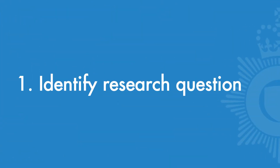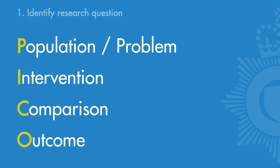Once you've found a piece of research that's relevant to you and your concerns, there are five key steps you can go through to assess the quality of the research and how its findings apply to you. Step one is to identify the research question and determine whether this is relevant to what you want to find out.